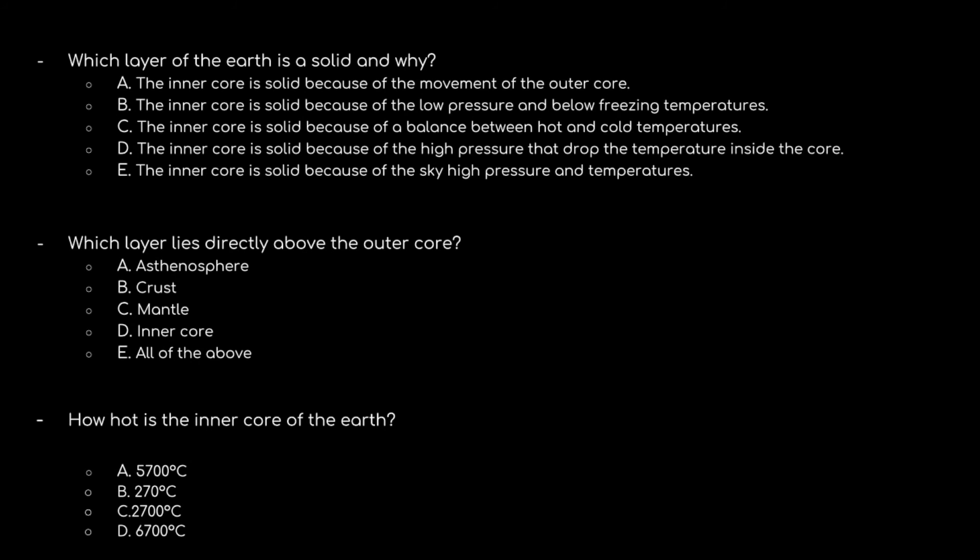Which layer of the Earth is a solid and why? The options are: A) the inner core is solid because of movement of the outer core; B) solid because of low pressure and low freezing temperatures; C) solid because of a balance between hot and cold temperatures; D) solid because of high pressure that dropped the temperature inside the core; E) solid because of high pressure and temperatures. The correct answer is option E: the inner core is solid because of the high pressure and temperatures.